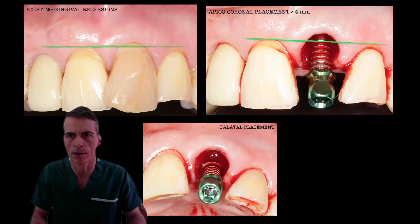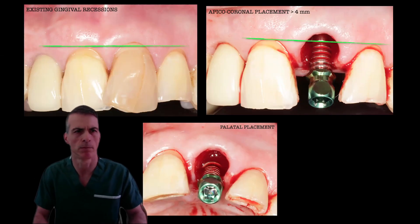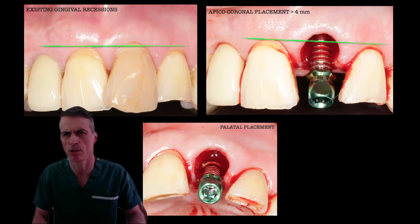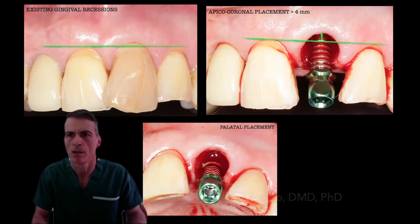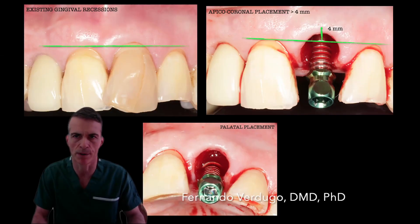All in all, placing an implant that is too shallow may lead to restorative complications and basically not being able to achieve a smooth emergence profile when the restoration is delivered. The platform of that implant should be about 4 millimeters from the adjacent gingival margins. If there is presence of recessions, aim for slightly deeper.